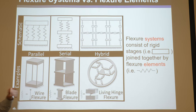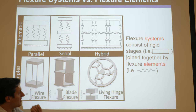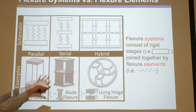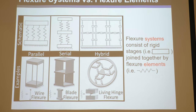There are also three types of flexure elements. The systems consist of rigid bodies connected by elements - the springs. In reality there are wire flexures, blade flexures, and living hinges, all schematically represented by a zigzag spring. There are three categories of elements as well: parallel elements, serial elements, and hybrid elements. The three system categories and three element categories will be covered in detail in future lectures because they matter a lot to design.